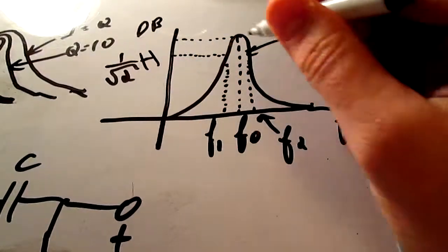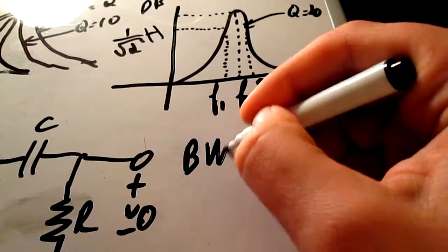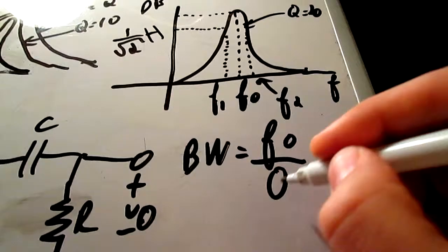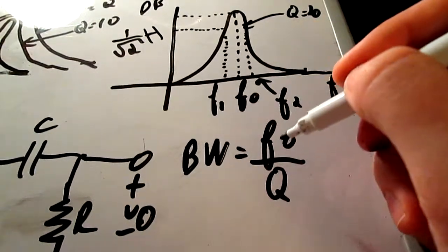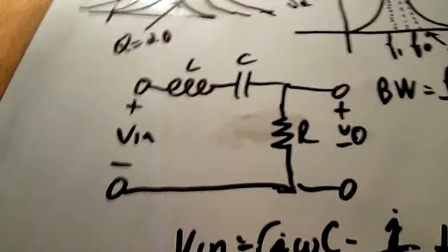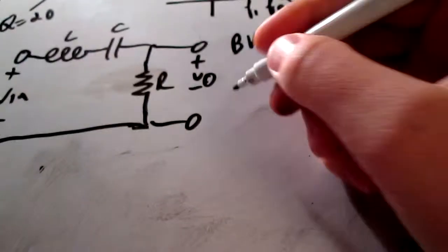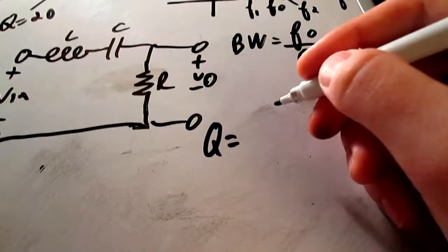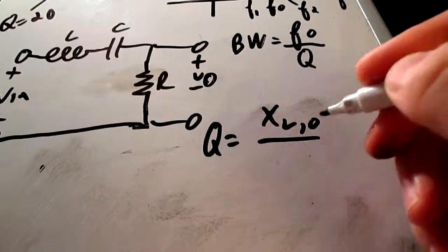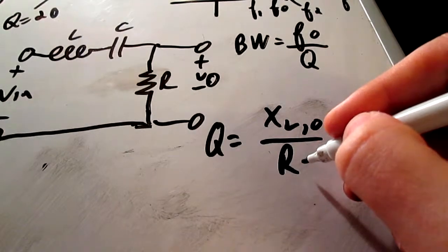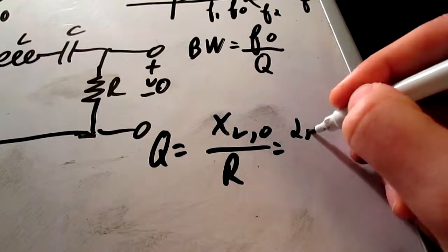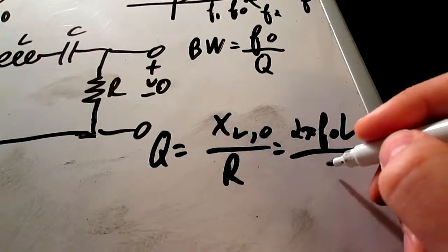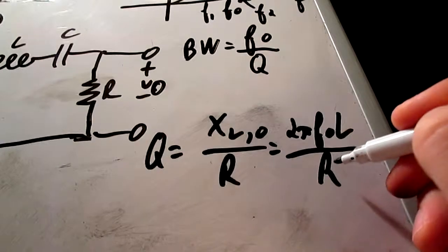So in order to find the bandwidth of this guy, you do F naught divided by Q. And in order to find Q for this circuit, Q for this circuit is equal to xl center frequency over r. In this case it's 2 pi f naught l over r. And if you had your load it would be 2 pi f naught l over r in parallel with r l.